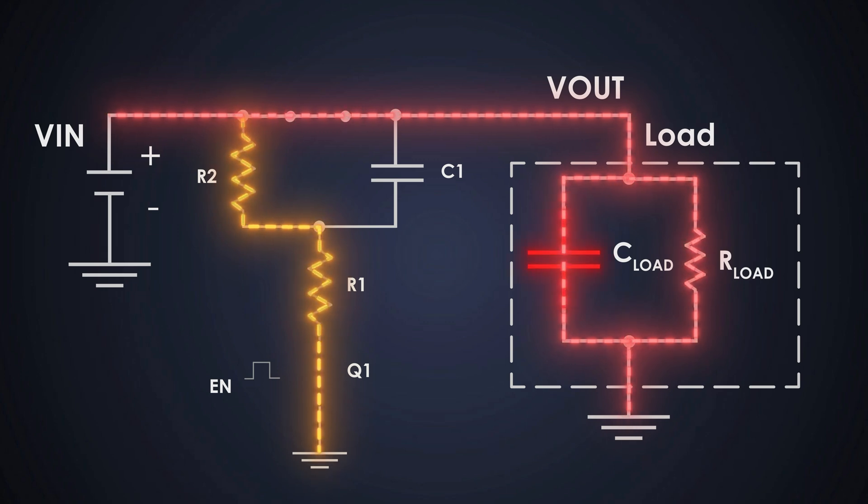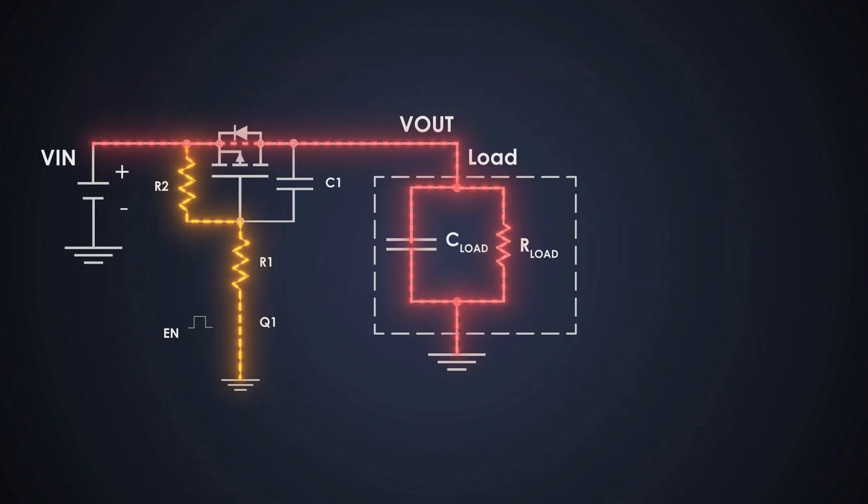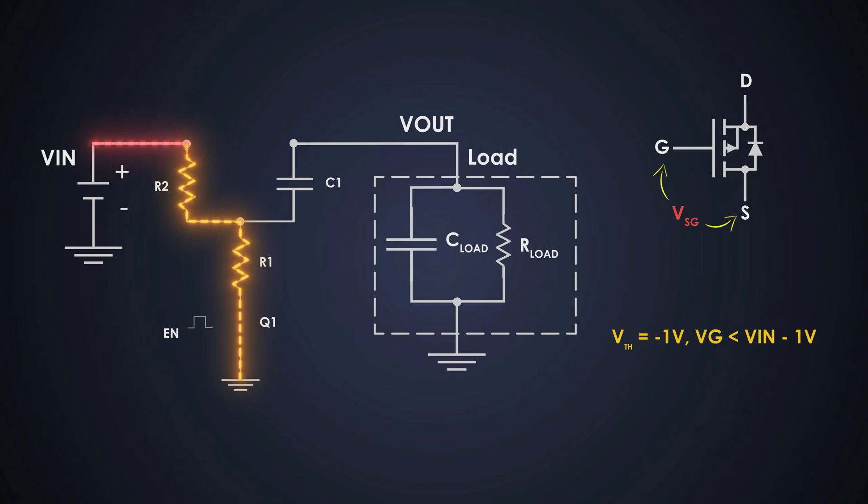This load can be highly capacitive. To turn on a P-channel MOSFET, VGS should be high enough. Here the source of the MOSFET is connected to the VIN. So, we must pull the gate of the MOSFET to low to turn it on. The gate must be at least one threshold voltage above VIN to turn it on. This threshold voltage depends on the MOSFET parameter.